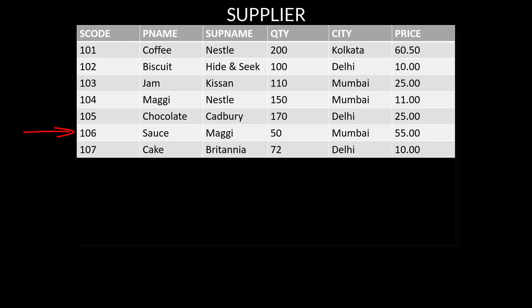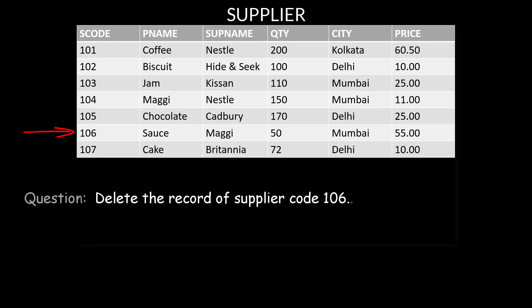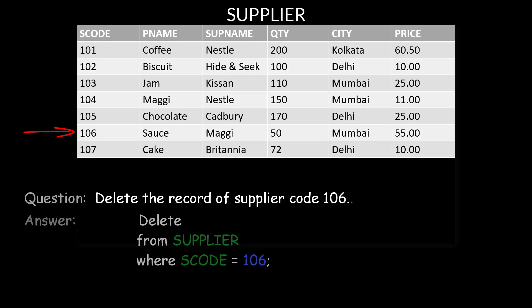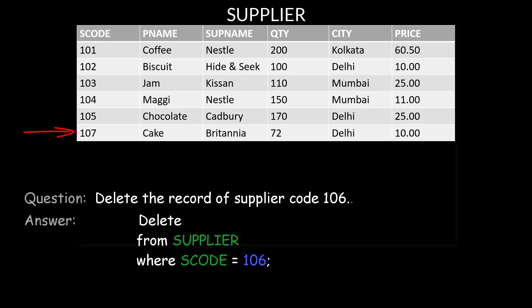Example: delete the record of supplier code 106. The answer is: DELETE FROM supplier WHERE s_code = 106. Important: do not write an asterisk with DELETE as it gives an error, and do not omit the WHERE clause, otherwise all records will be deleted.